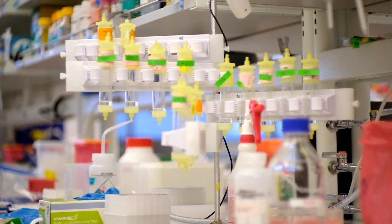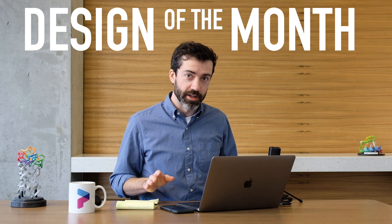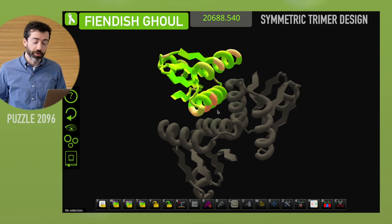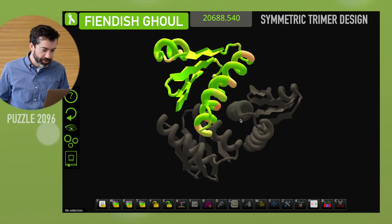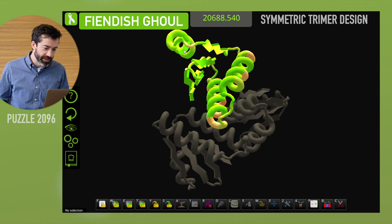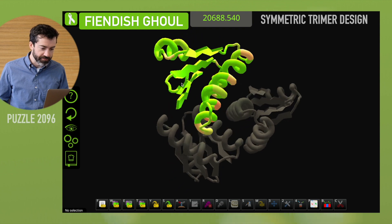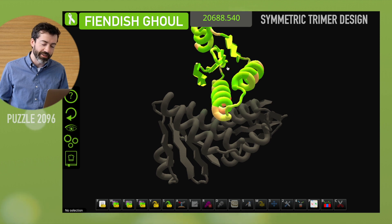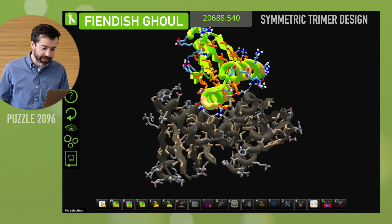And that brings us to this month's design of the month. This month I want to look at a symmetric trimer design from puzzle 2096. This is a design from Fiendish Ghoul. We have a very interesting fold here with three helices that pack on both sides of a four-stranded beta sheet. This is an interesting topology. I like topologies like this that have a mix of alpha helices and beta sheets.